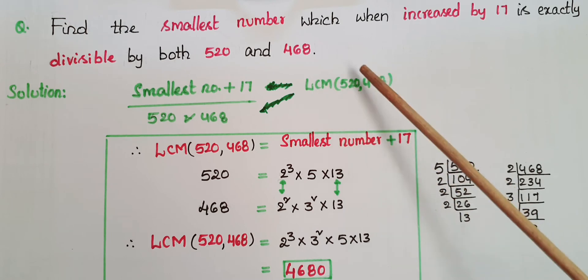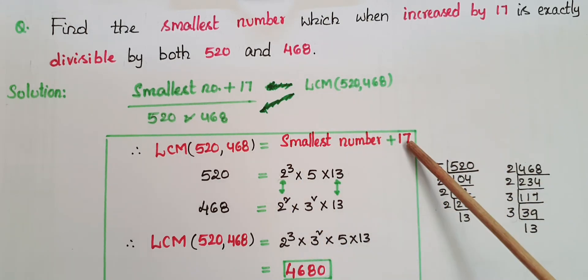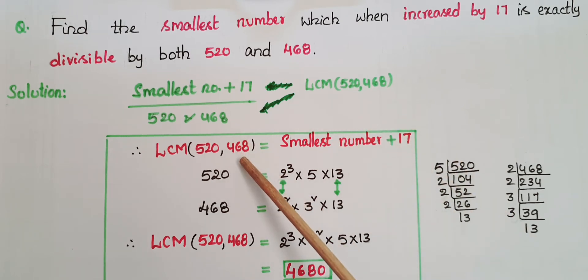That means LCM of these two numbers is equal to smallest number plus 17. So once you find LCM of these two numbers, then subtract 17 from this LCM, then you will get the required smallest number. So for finding LCM, you have to find prime factors for these two numbers.